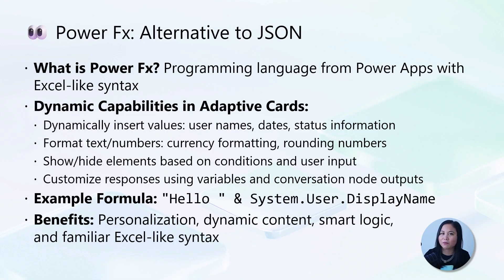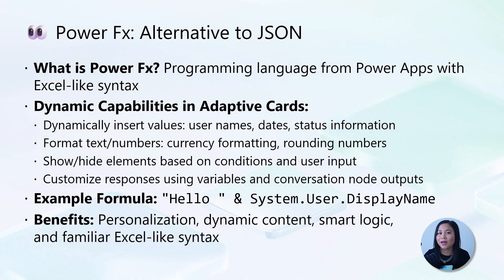Previously, we learned about PowerFX, which is a programming language from PowerApps that uses Excel-like syntax. In Copilot Studio, you can use PowerFX as an alternative to JSON when you want to create dynamic adaptive cards with your data. With PowerFX, you can dynamically insert values like username and dates, format text and numbers, and show or hide elements based on conditions and user input. For example, using a formula to combine the word "hello" and the system variable of user display name allows you to personalize and make your adaptive cards more engaging.